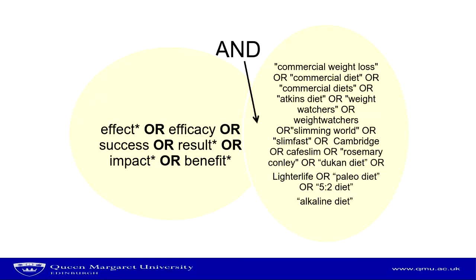We also use phrase search, which means we want the database to find words as a phrase. For the first term in the bubble — 'commercial weight loss' — we don't want the database to find the words commercial, weight, and loss independently; we want them to appear together as a phrase. If you put inverted commas around it the database will search it as a phrase. We've linked all these synonyms together with OR: 'commercial weight loss' OR 'commercial diet' OR 'commercial diets' OR 'Atkins diet' and so on. Then to search for articles containing words to do with effect and articles to do with commercial weight loss programs, we've linked these two key concepts with the boolean operator AND.